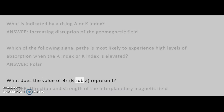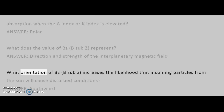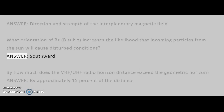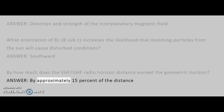What does the value of Bz represent? Answer: direction and strength of the interplanetary magnetic field. What orientation of Bz increases the likelihood that incoming particles from the Sun will cause disturbed conditions? Answer: southward. By how much does the VHF-UHF radio horizon distance exceed the geometric horizon? Answer: by approximately 15% of the distance.